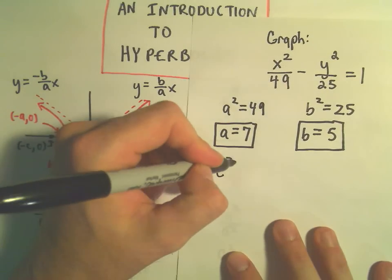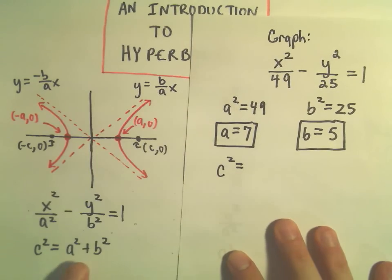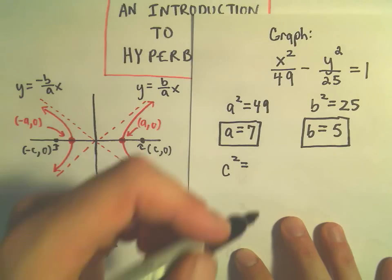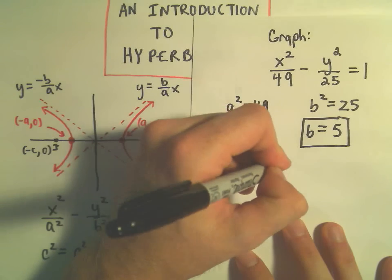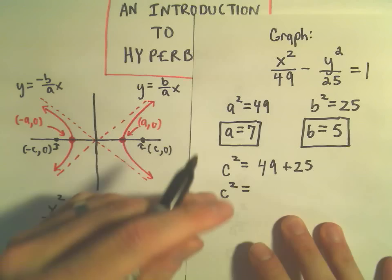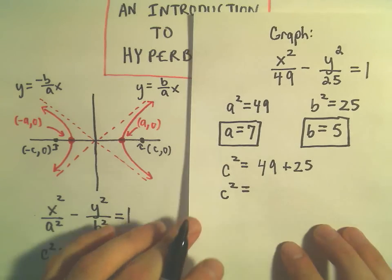We know our relationship. We have c squared equals a squared plus b squared. Again a squared is the denominator of the x squared term. b squared is the denominator of the y squared term. So c squared is going to be 49 plus 25. So c squared is going to be, looks like 74.